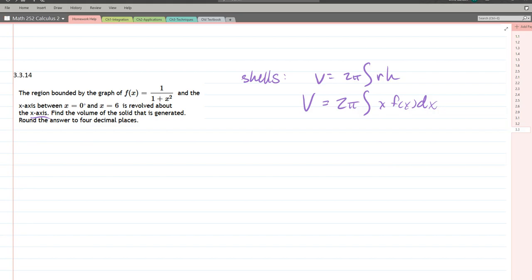Now first, we really want to think about what this region looks like, and we're going from 0 to 6. So we're starting at 0, going to 6. When you plug in 0 here, f of 0 will be 1 over 1, which is 1.